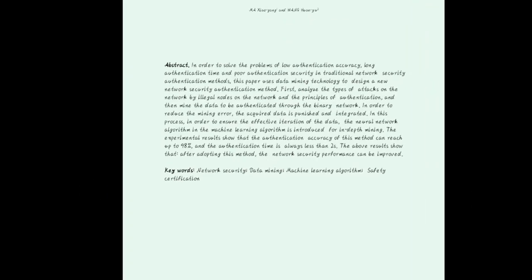Abstract. In order to solve the problems of low authentication accuracy, long authentication time, and poor authentication security in traditional network security authentication methods, this paper uses data-mining technology to design a new network security authentication method. First, we analyze the types of attacks on the network by illegal nodes and the principles of authentication, then mine the data to be authenticated through the binary network. In order to reduce the mining error, the acquired data is published and integrated.